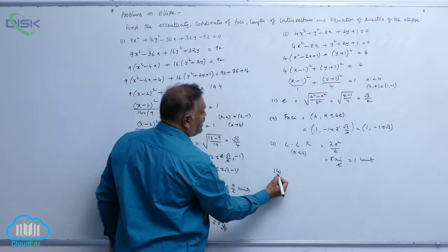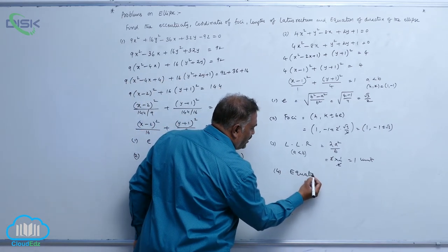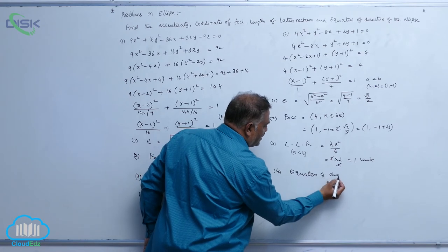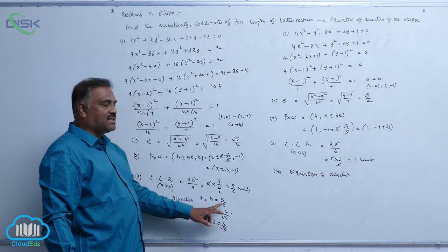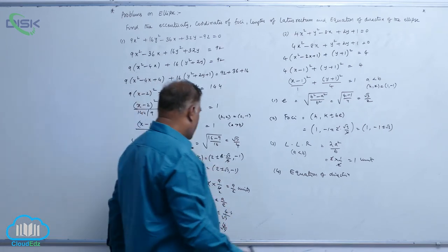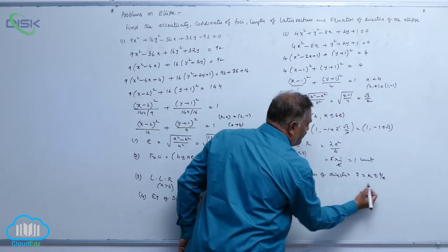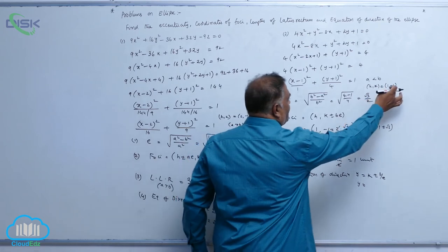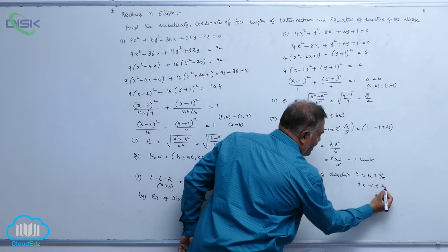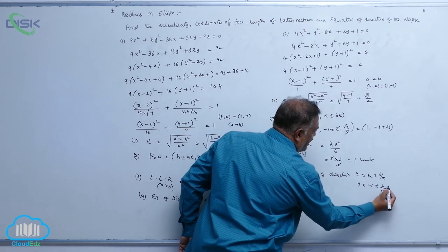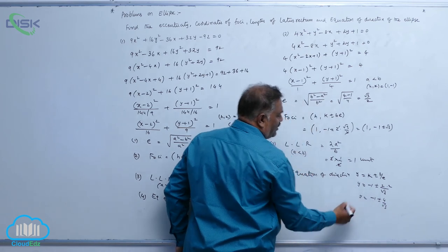And fourth one, equation of directrix. So equation of directrix, let us check the previous problem here. We are having x is equal to h plus minus a by e. In this case, it is y is equal to k plus minus b by e. So y is equal to, in place of k, we are having minus 1, b value is equal to 2 divided by root 3 by 2. That is minus 1 plus minus 4 by root 3.